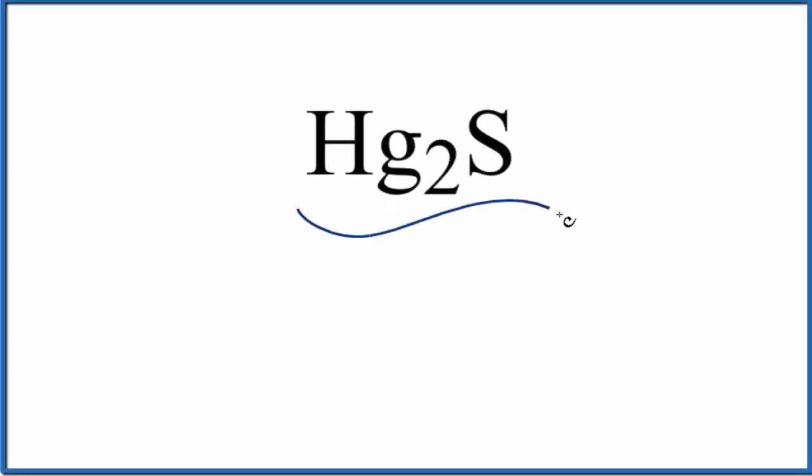Let's write the name for Hg₂S. So first off we have this metal here, mercury (Hg), that's a metal, it's a transition metal, we have a non-metal. So metal, non-metal, we're going to name this as an ionic compound.